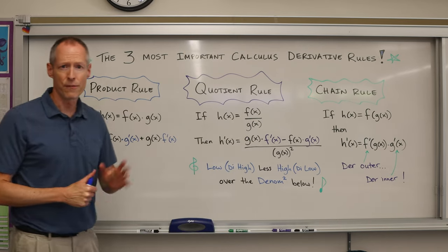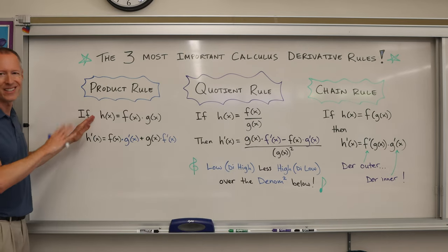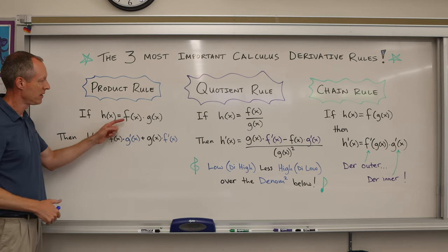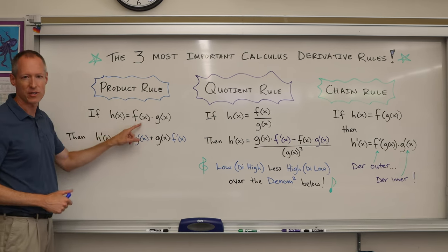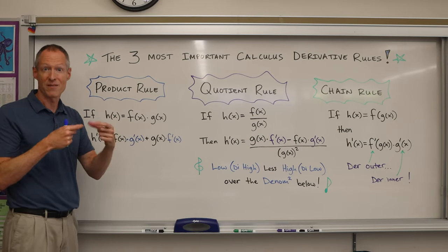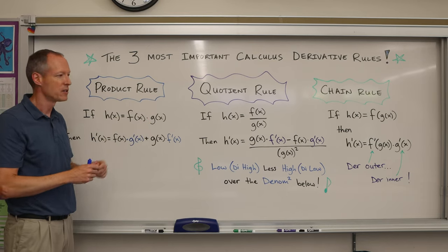The first one is product rule. If h(x) = f(x) × g(x), here's how you know when to use the product rule: you're going to have two different functions involving the variable, for our purposes x. So you might have like sine x times x squared, but you're multiplying two separate functions.